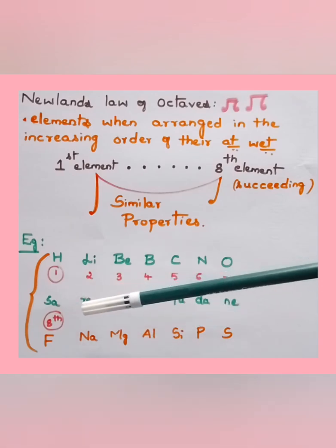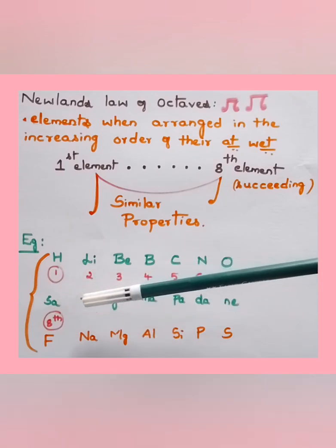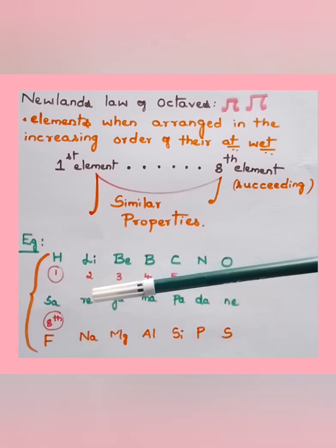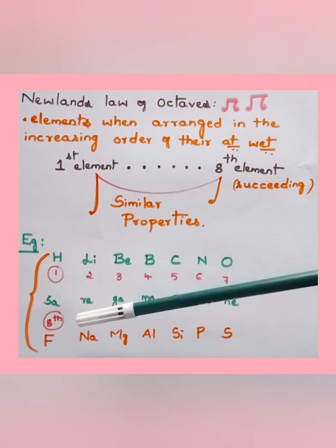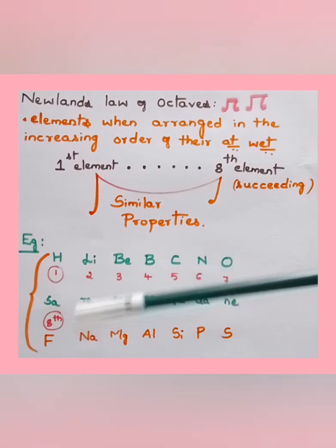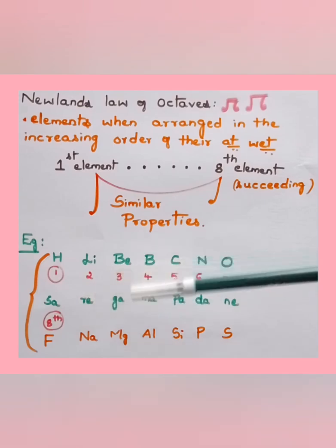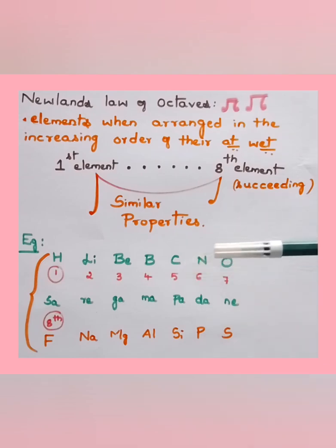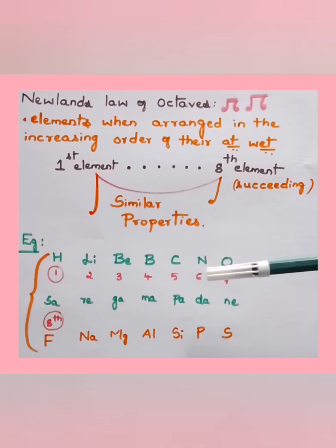Like in the Indian musical scale where 'sa' repeats, the eighth element was almost similar to the first. This law was later rejected because with the discovery of rare gases, it was found to be the ninth element and not the eighth that had similar properties.